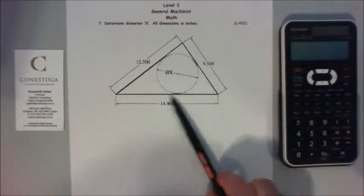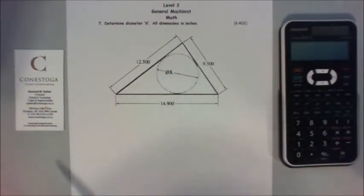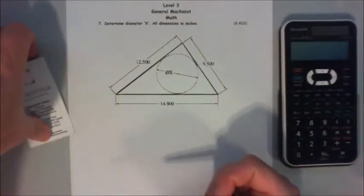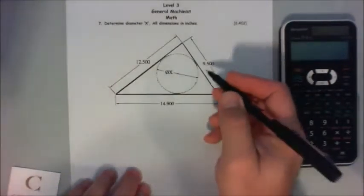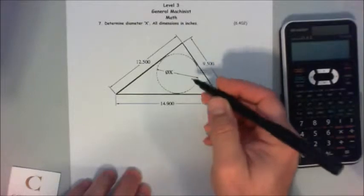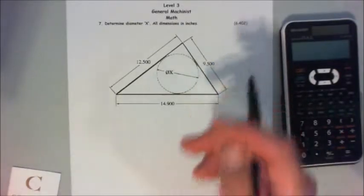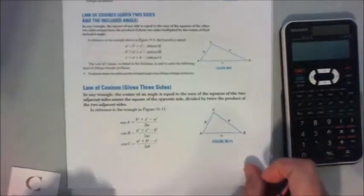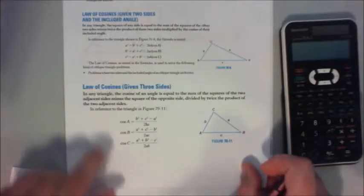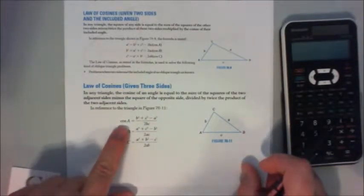We want to know the diameter of a ball that sits tangent to three points of a triangle. So with knowing all three points, the law of cosine given three sides, I can figure an angle out.